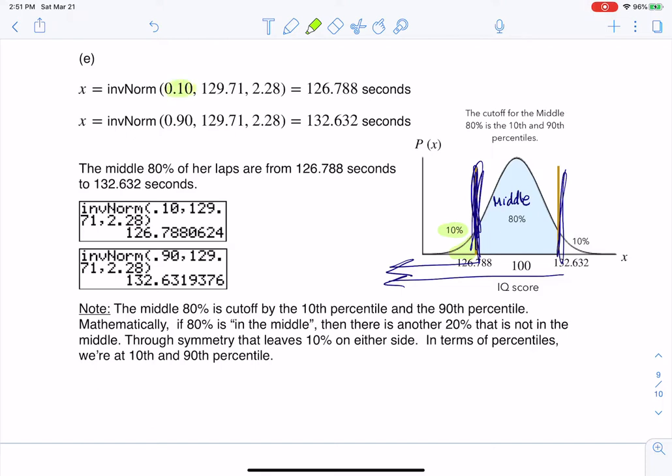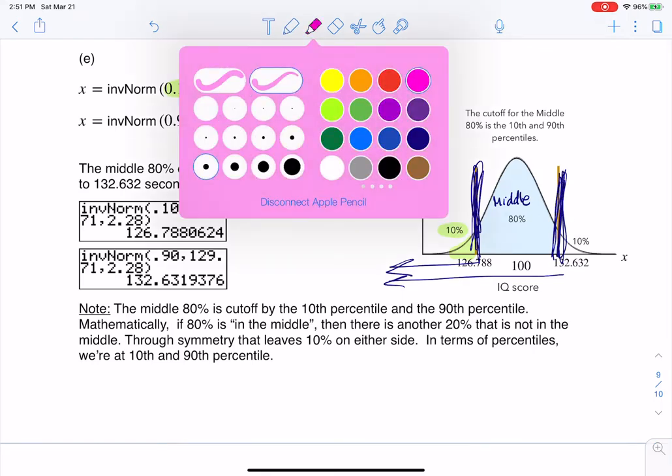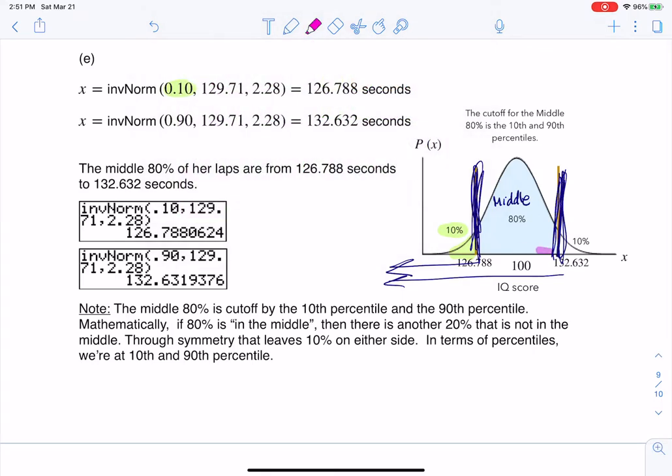Now, if I go from this second cutoff that was up here, because these are the two cutoffs for the middle 80%, if I want to shade all of the area from here on down, I'm shading all of this. Give me a moment to shade. And if I want to shade that, I need to think about 80% and 10%. That's how much area is from here on down.